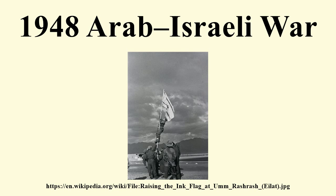Transjordan took control of the remainder of the former British Mandate, which it annexed, and the Egyptian military took control of the Gaza Strip. At the Jericho Conference on 1 December 1948, 2,000 Palestinian delegates called for a unification of Palestine and Transjordan as a step toward full Arab unity.